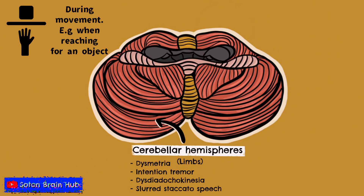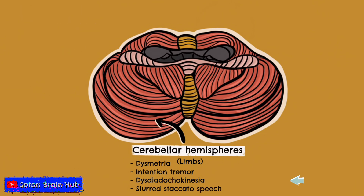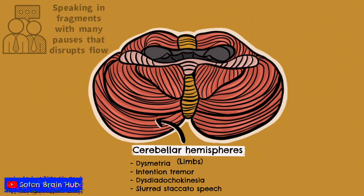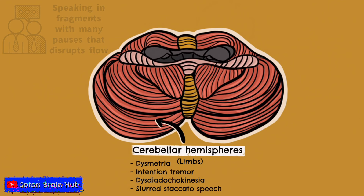Damage to the hemispheres may also cause an intention tremor, dysdiadochokinesia, and slurred staccato speech. There are some specific tests you can perform to test for these signs, including asking the patient to rapidly pronate and supinate their forearm and hand onto their other hand to test for dysdiadochokinesia.